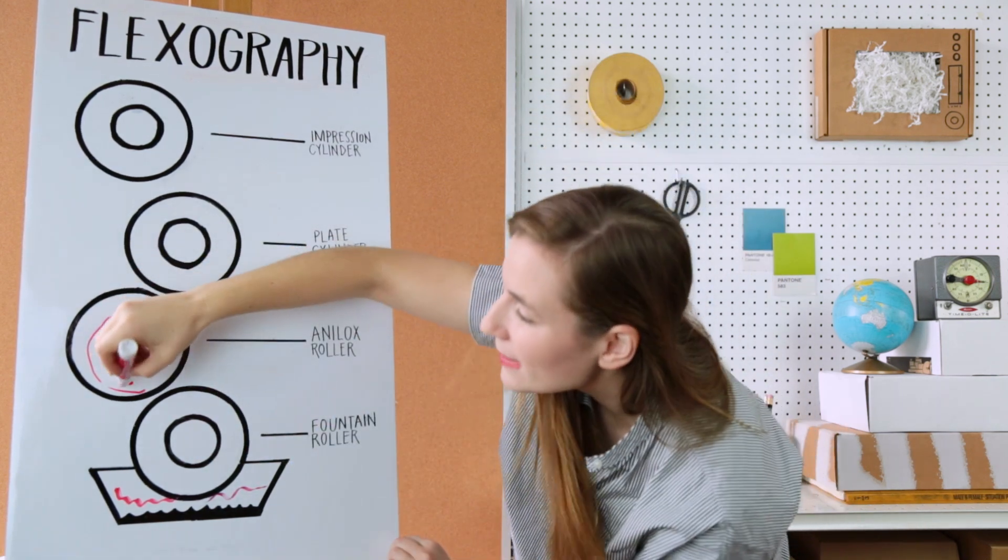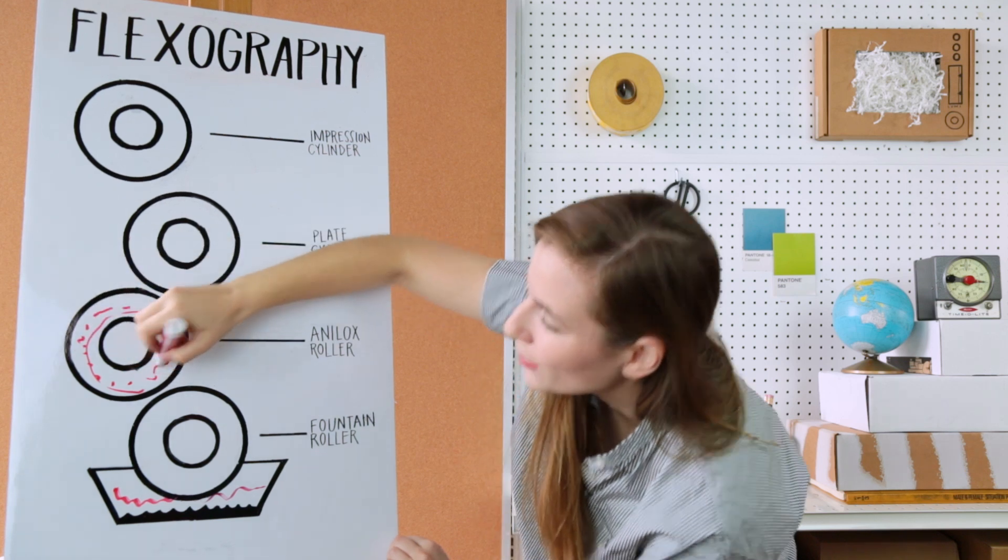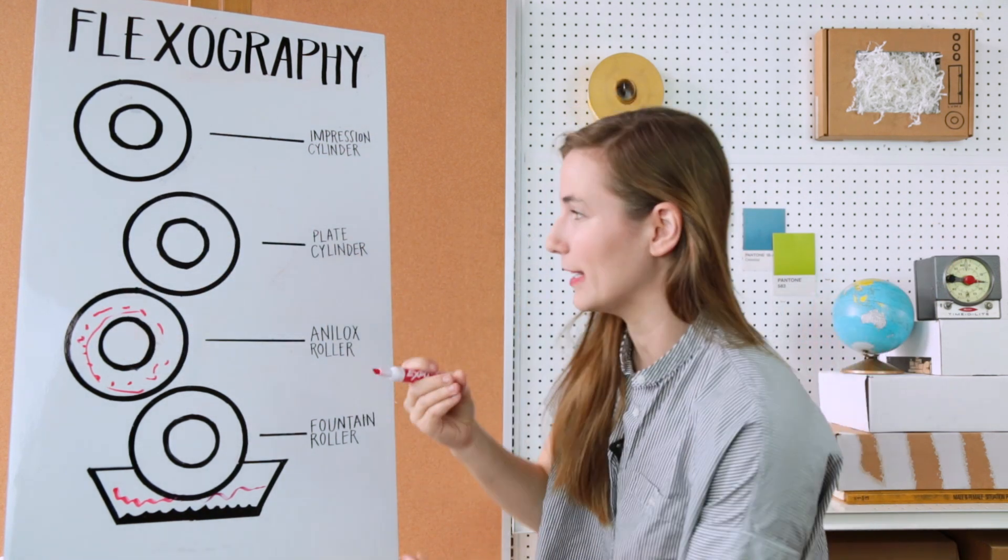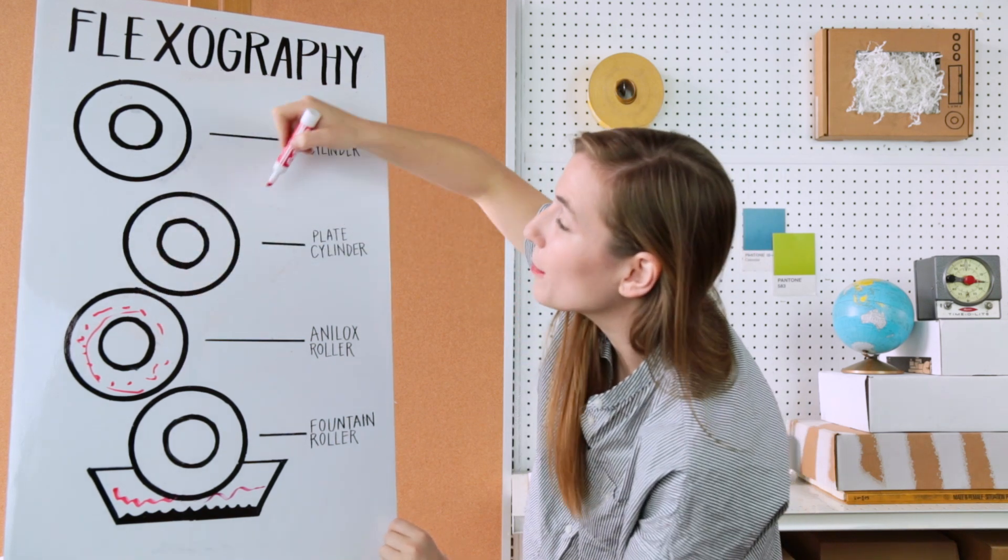Now the anilox roller is covered in tiny little cells that pick up the ink. More cells per inch mean more ink coverage. And it transfers the ink to your plate cylinder.